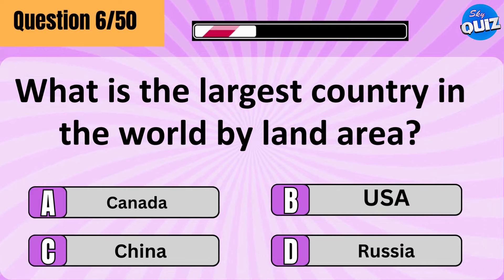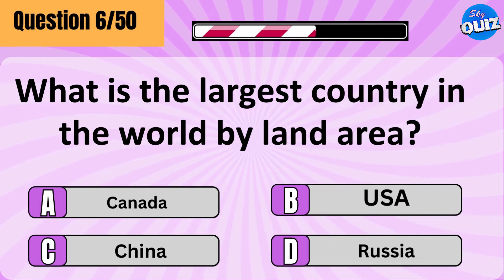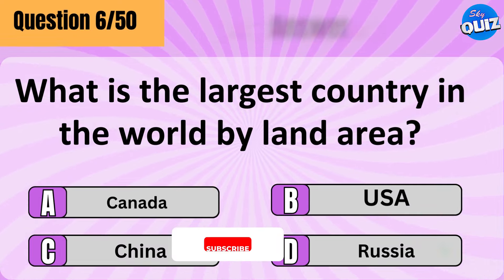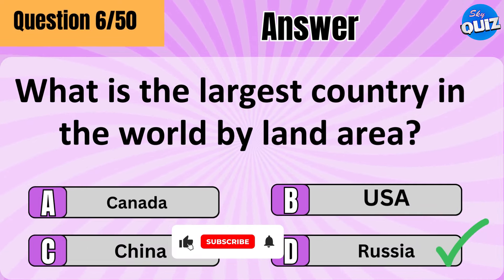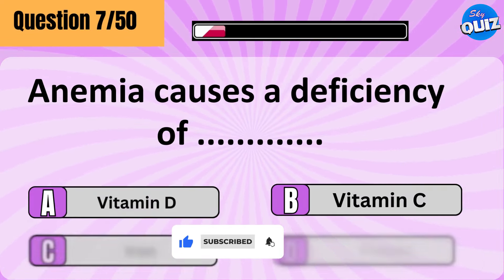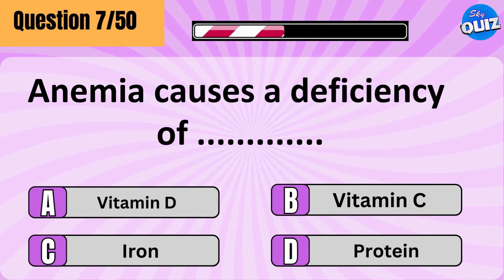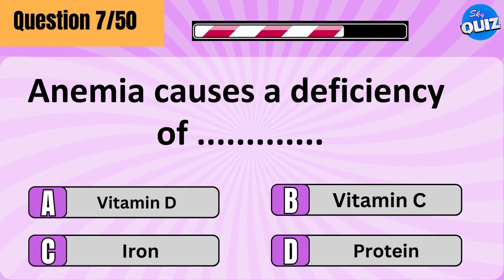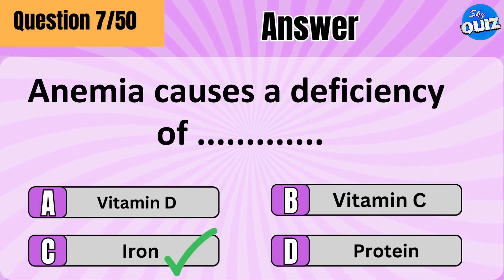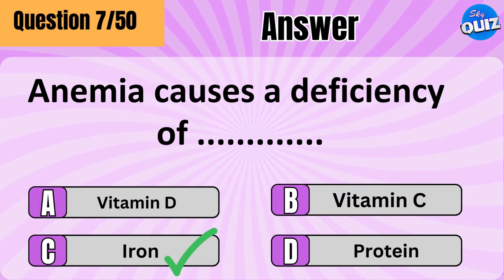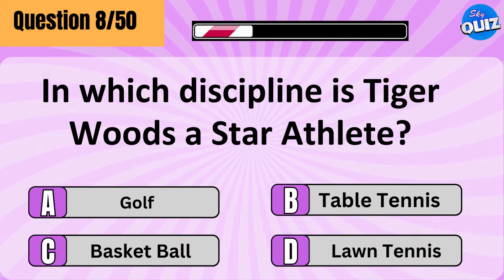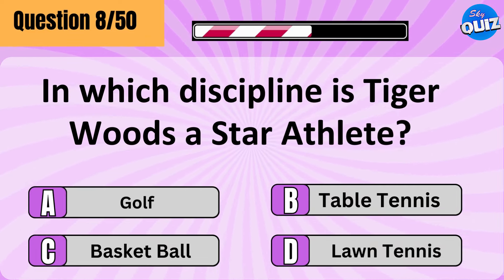What is the largest country in the world by land area? Russia. Anemia causes a deficiency of iron. In which discipline is Tiger Woods a star athlete?